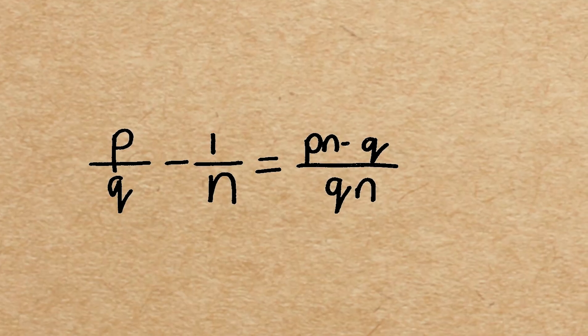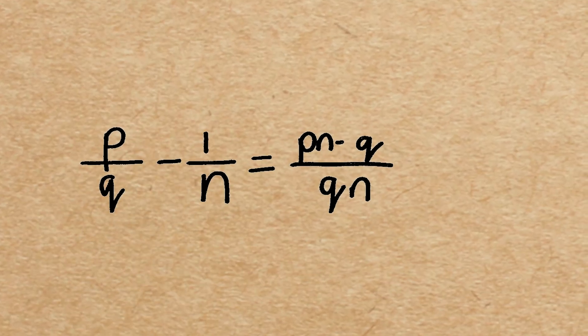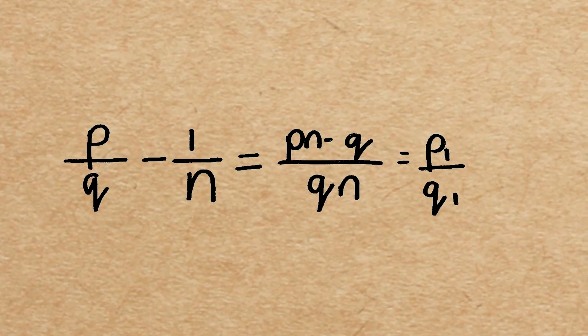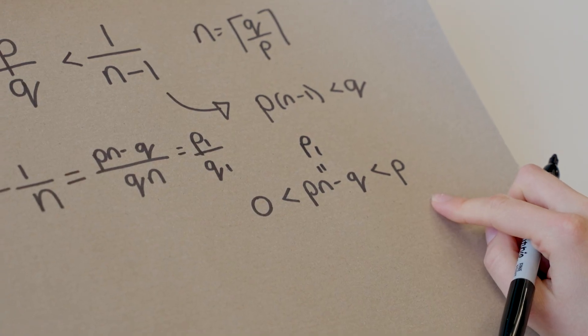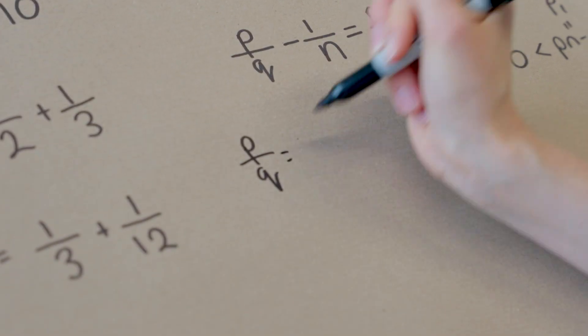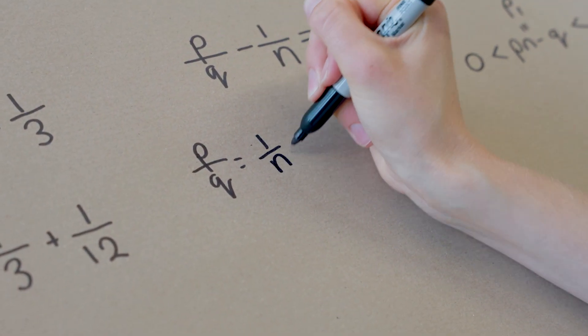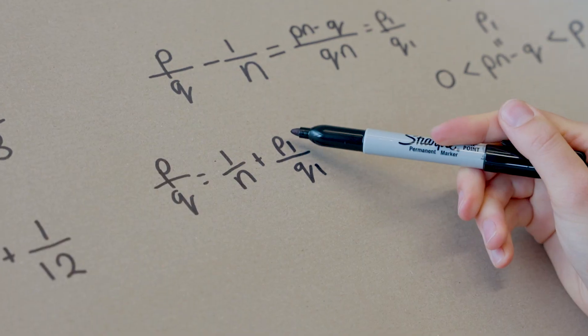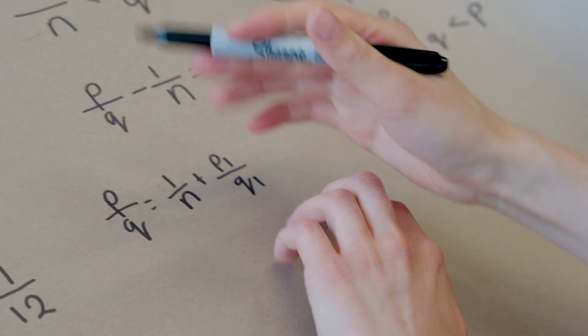So we've started with p over q, we've taken away one over n, and now we've ended up with a new fraction. We'll call it p1 over q1, such that p1 is less than p. Now if p1 is one, we're done. Because then we could just say that p over q is one over n plus p1 over q1. And if p1 is one, we're done. If not, we just repeat this process.